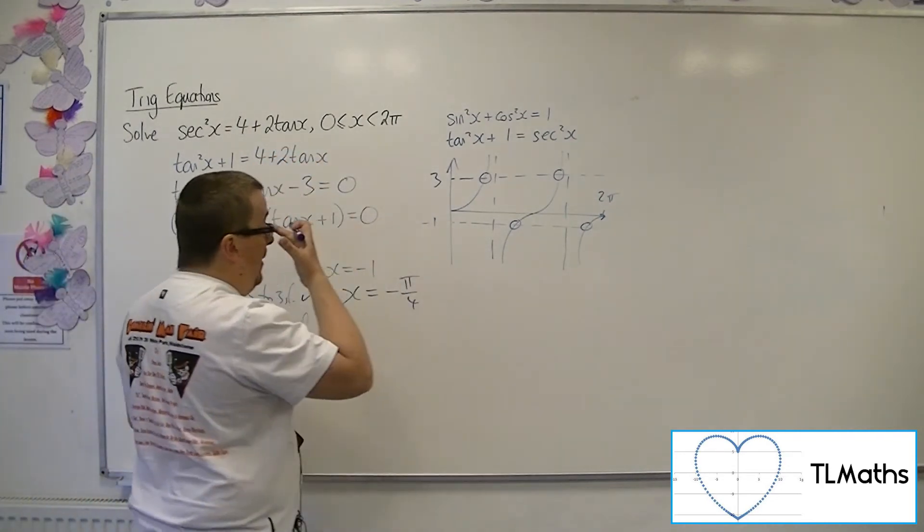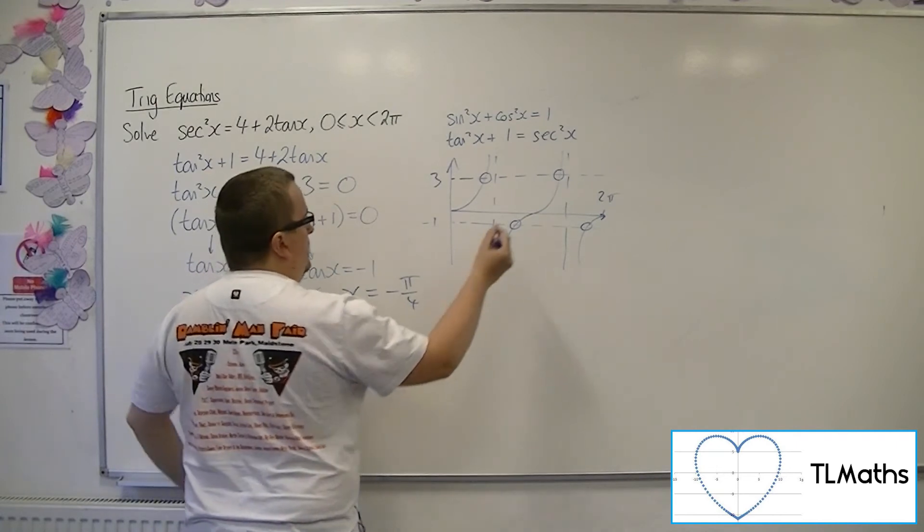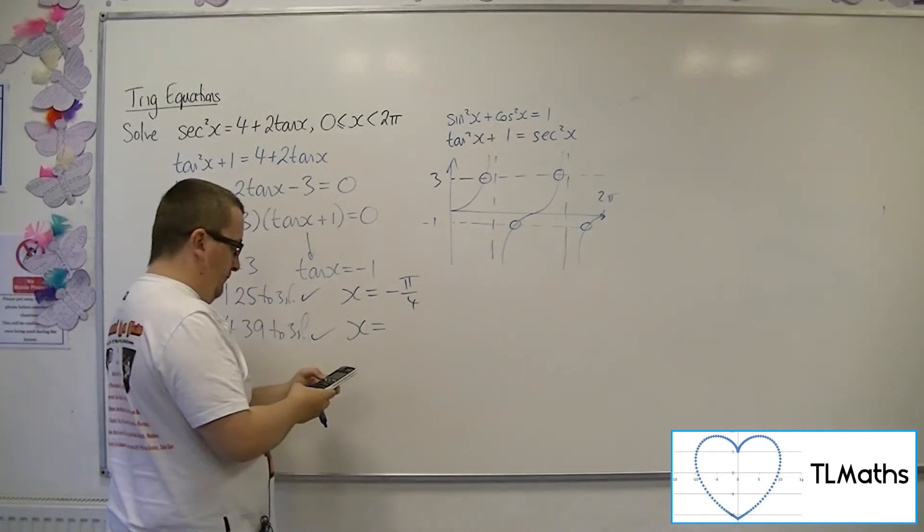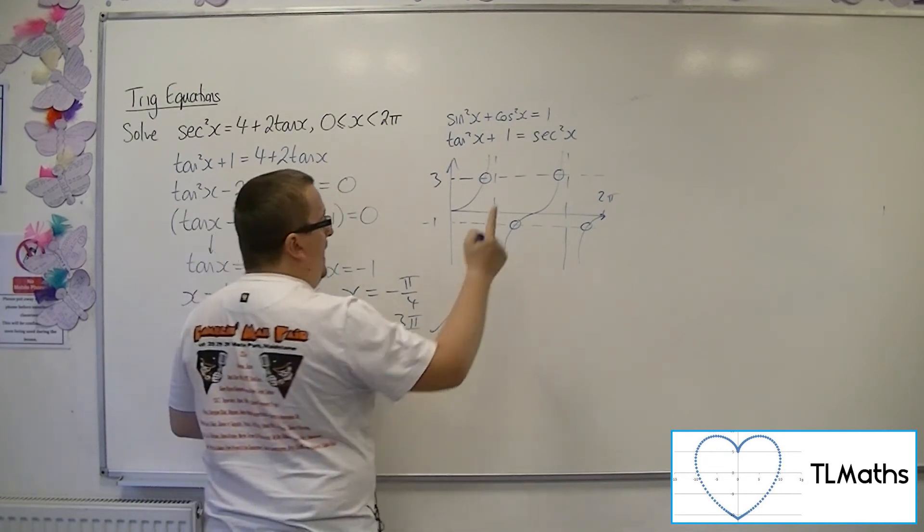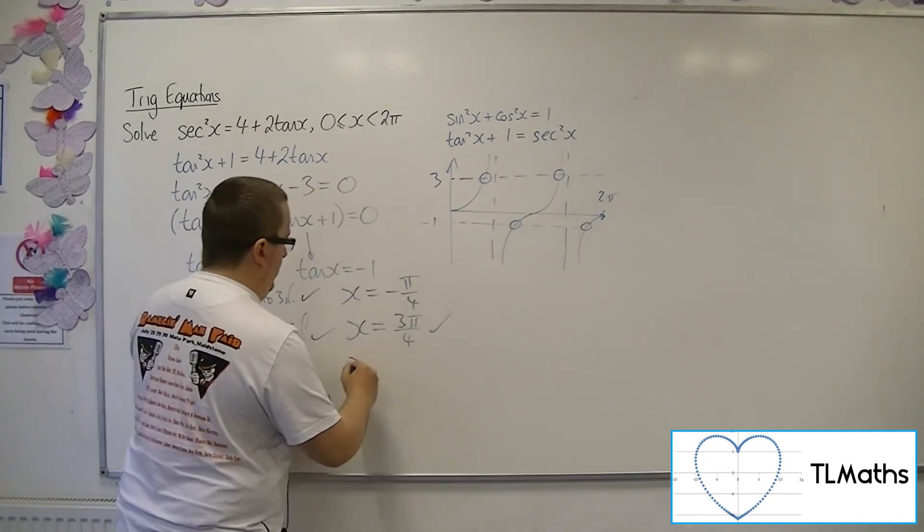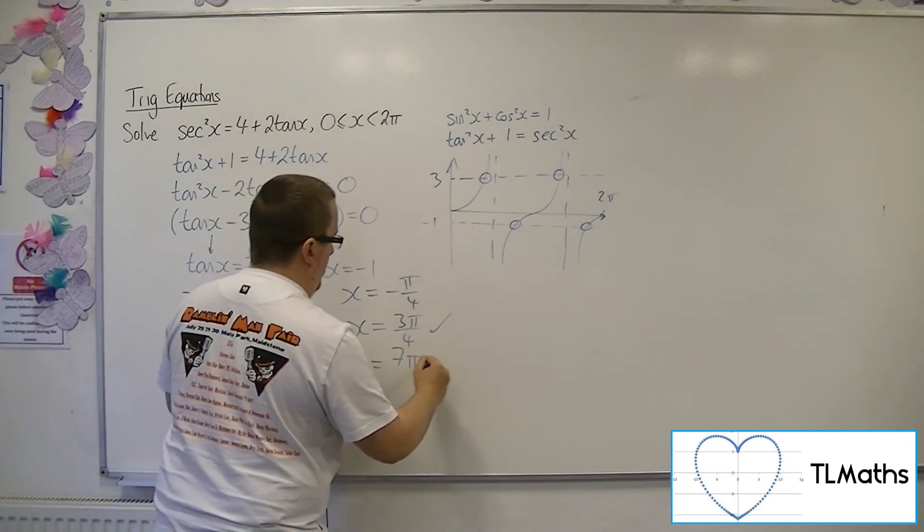So I need to add on pi to get to that one there. 3 pi over 4, that's a solution. And then add on another pi to get this solution, which is 7 pi over 4.